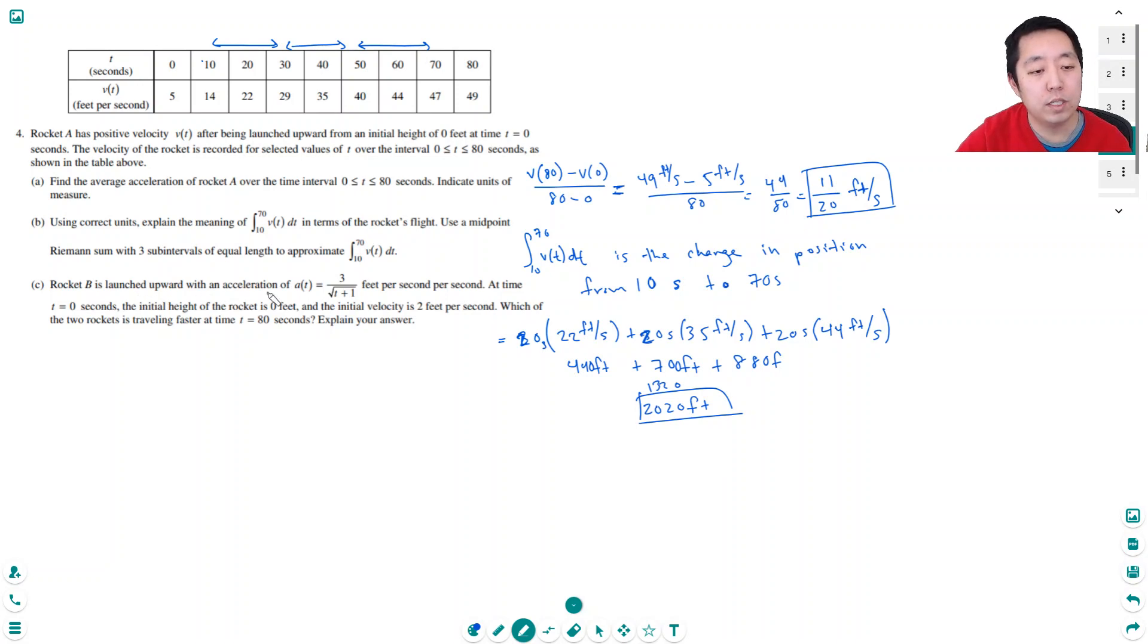Rocket B is launched upward with an acceleration of this, feet per second per second. At time t equals 0 seconds, the initial height of the rocket is 0 feet and the initial velocity is 2 feet per second. Which of the two rockets is traveling faster at time t equals 80? Explain your answer.